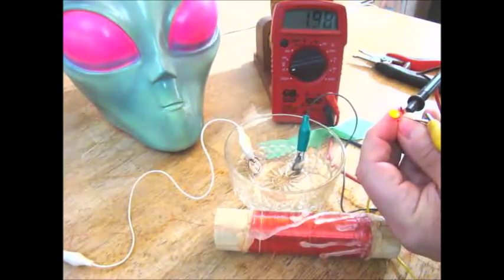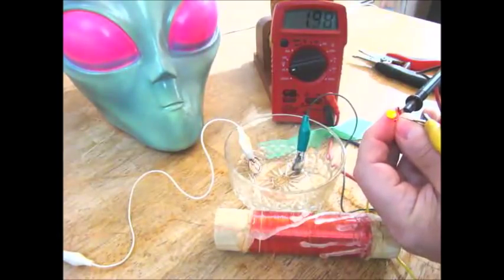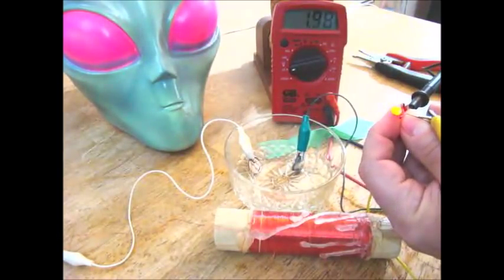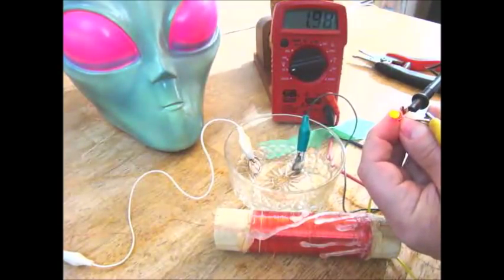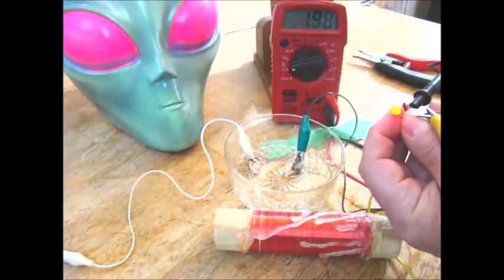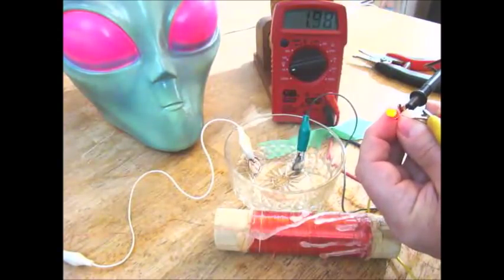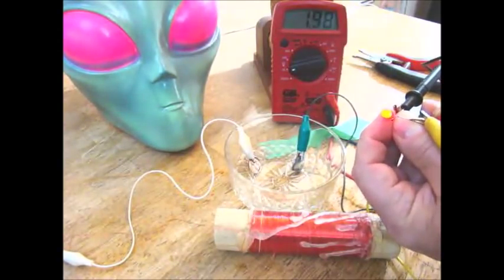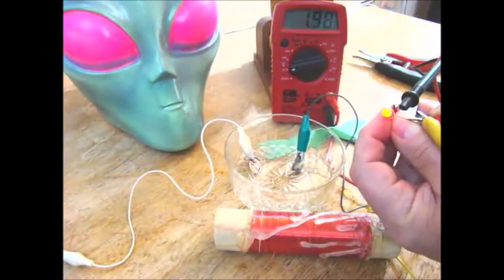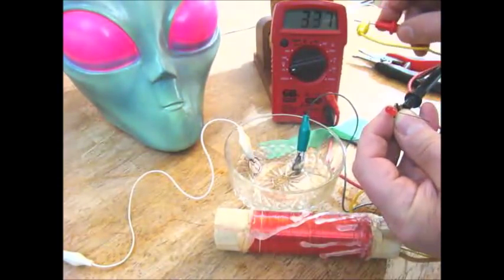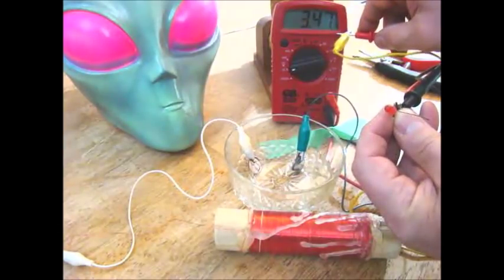So there, it proves that Tesla was right. There is an ether that surrounds the earth. If you can tap it safely, you can run your, if I built this coil huge, you could probably run this whole house off of it, but I have to build a huge coil. Right now, it'll do a little work. It'll light an LED bulb.